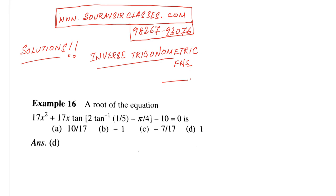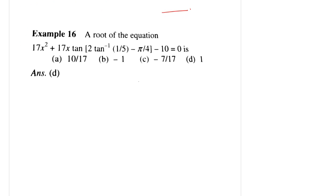Hello students, welcome to Souravanir Classes. This is Solutions on Inverse Trigonometric Functions. If you have any doubt, just WhatsApp us on this number at 98367-93076. Okay, so let's come to the problem. A root of the equation 17x² + 17x tan(2 tan⁻¹(1/5) - π/4) - 10 = 0 is.